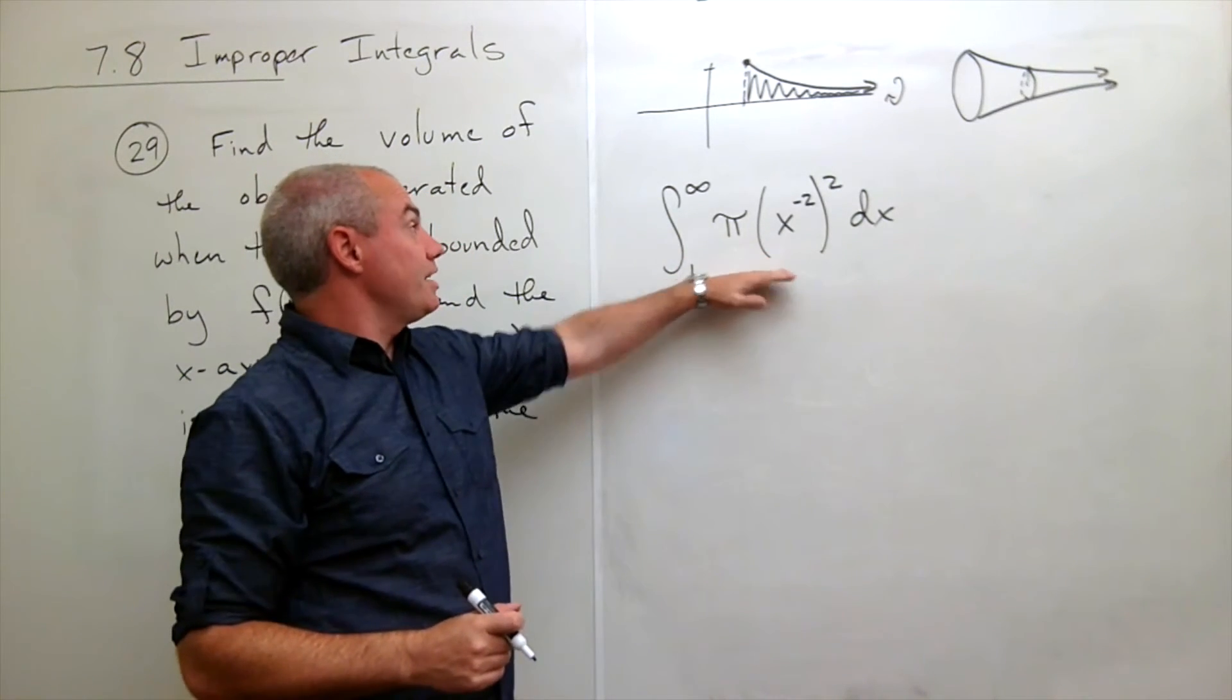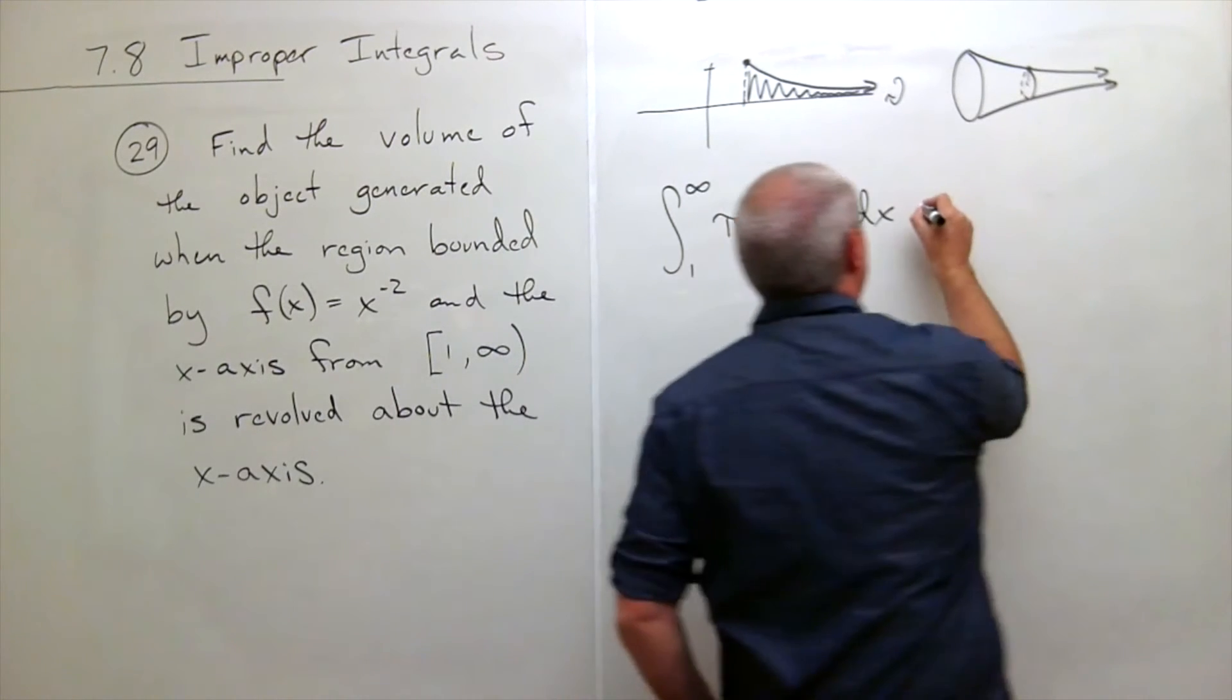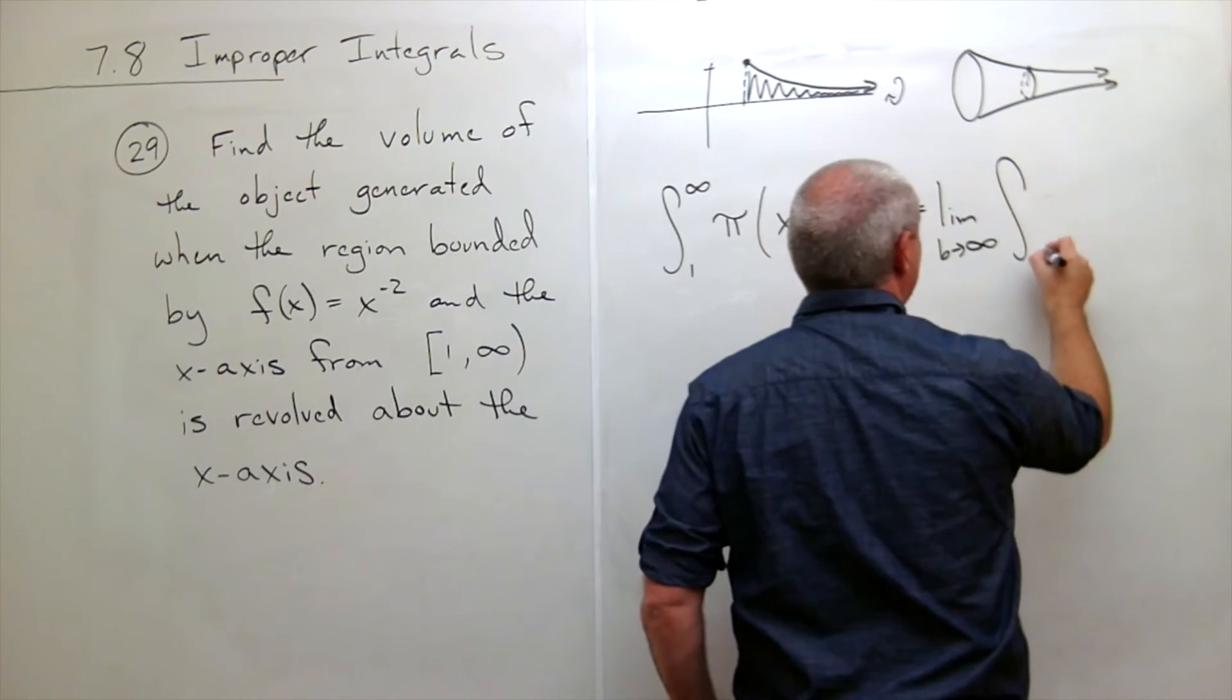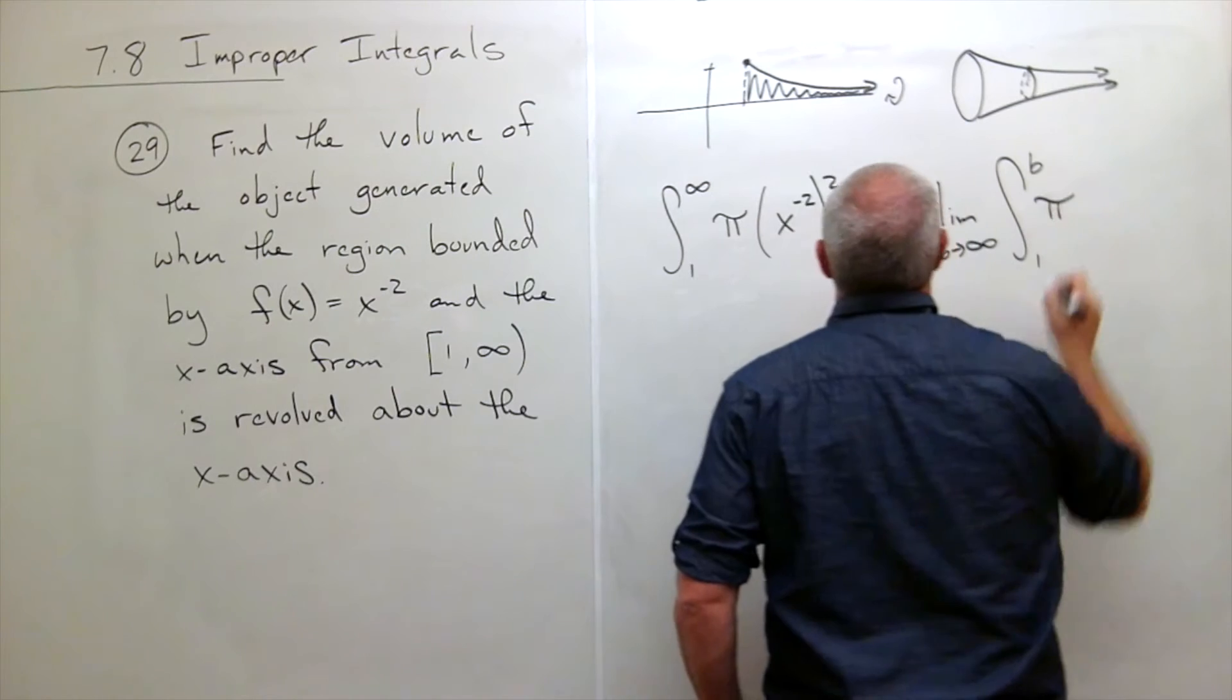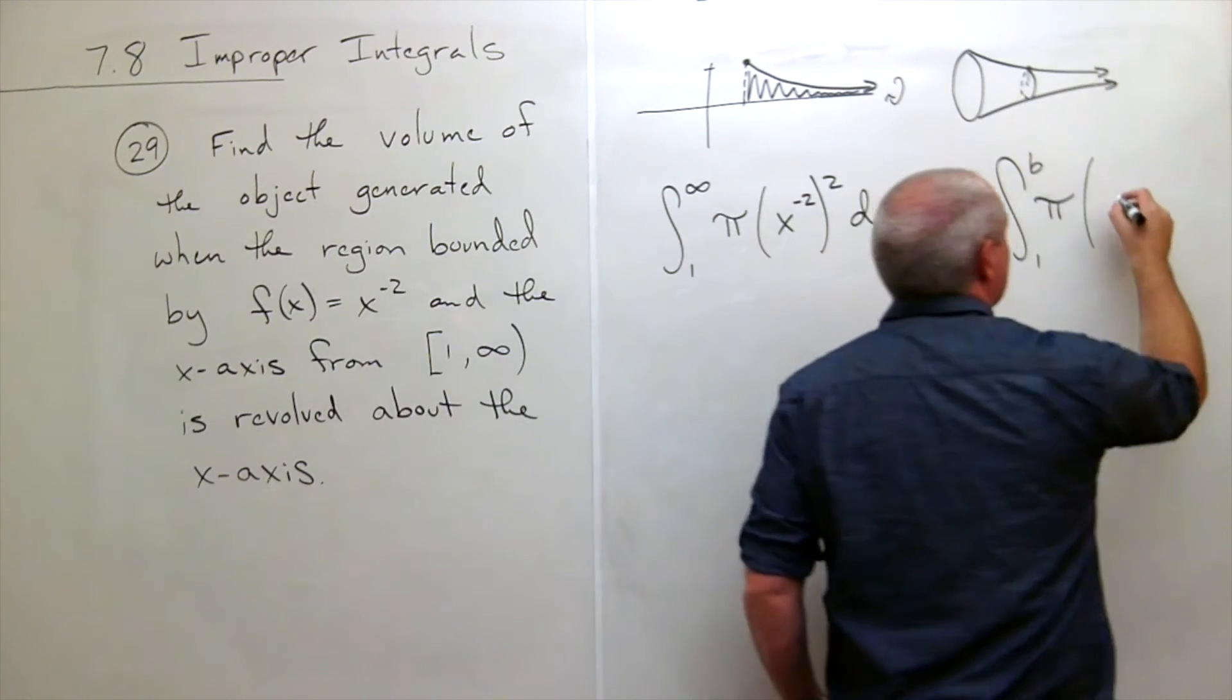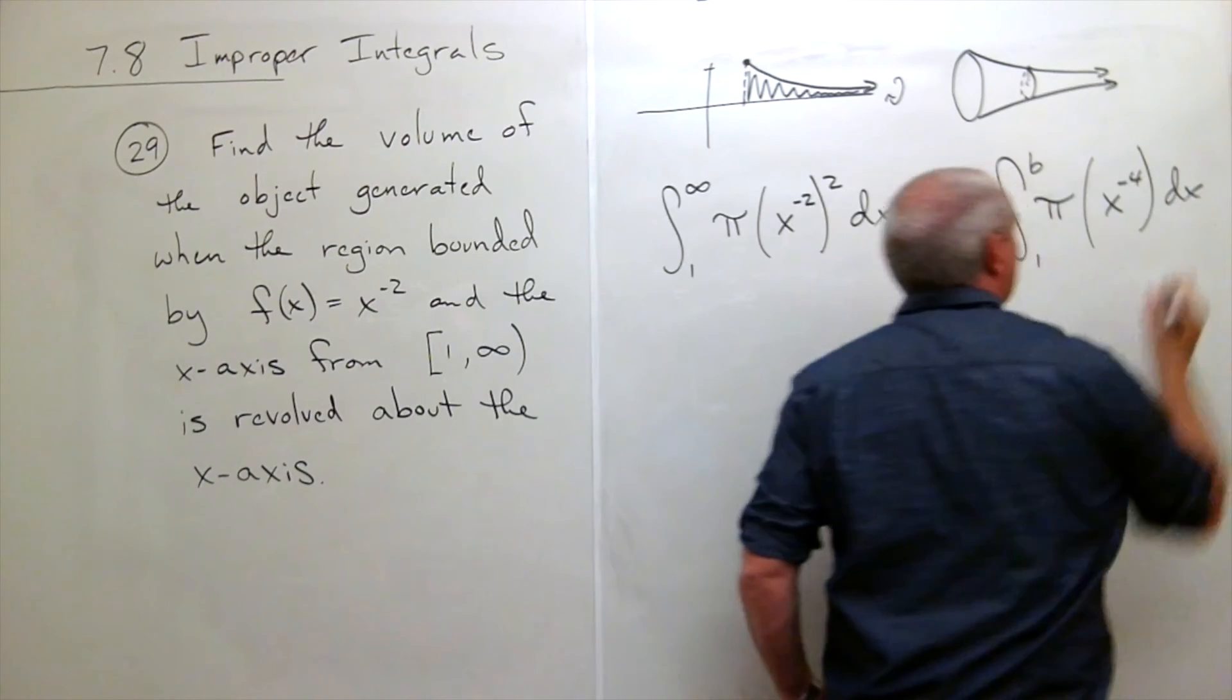Okay, first thing I see here, it's an improper integral, so I should write it as a limit. So let's do that. So I have the limit as b goes to infinity of the integral from 1 to b of pi times, well, another way of writing this, x to the minus 2 squared, that's x to the minus 4 dx.